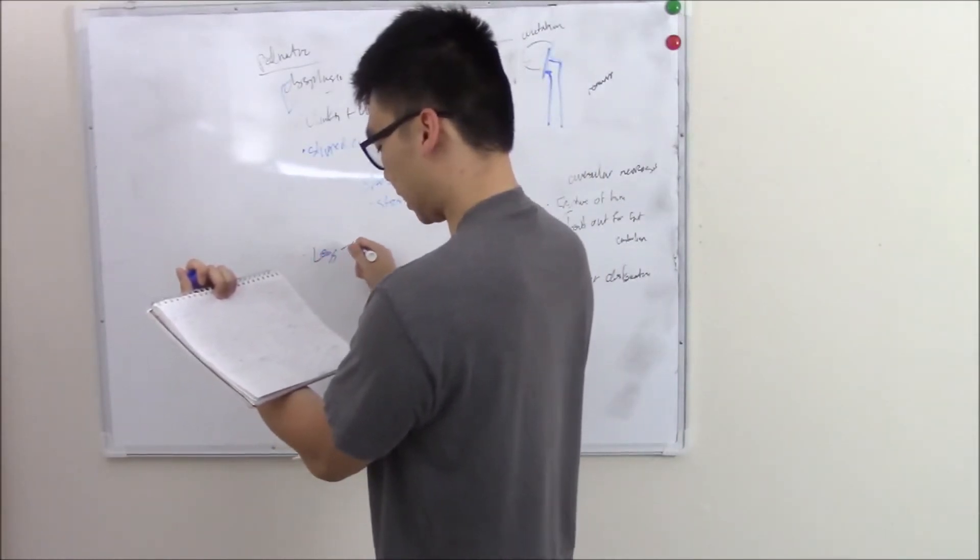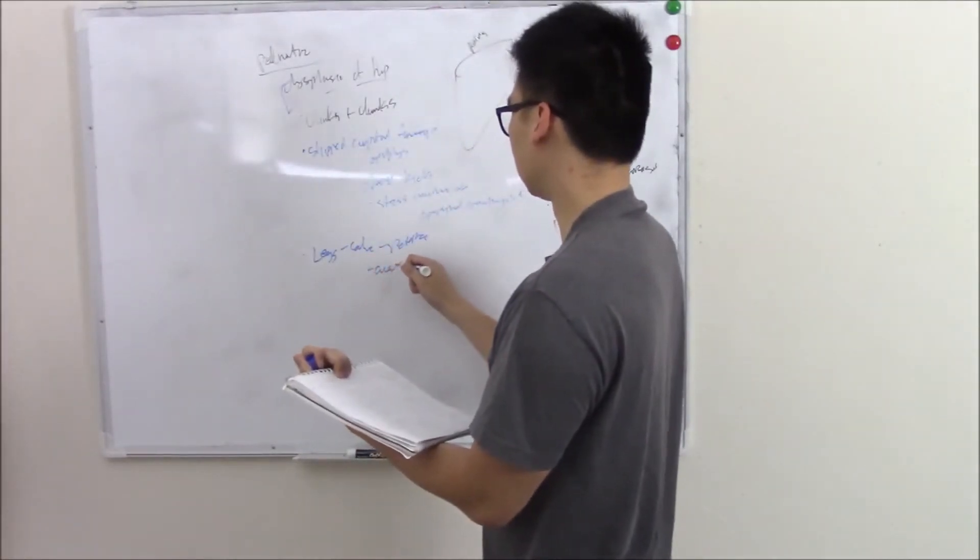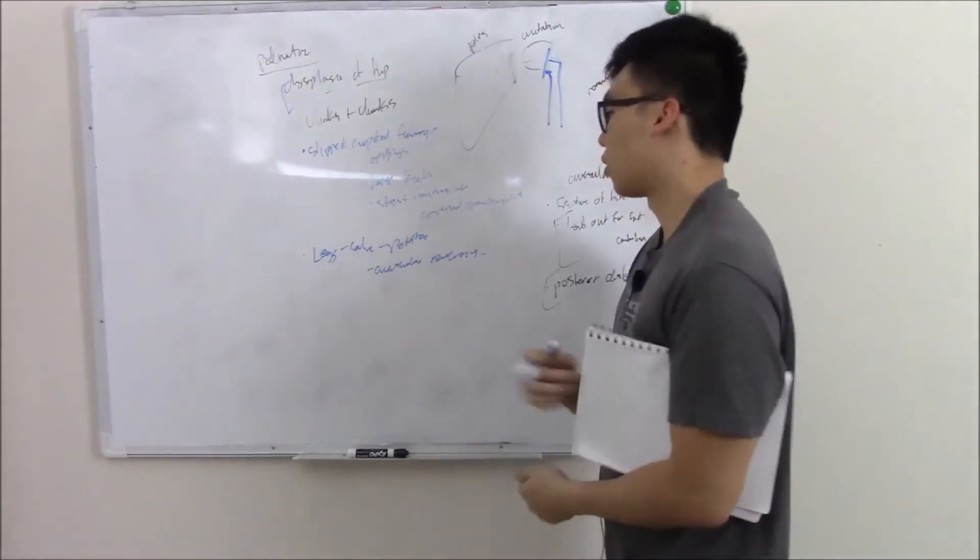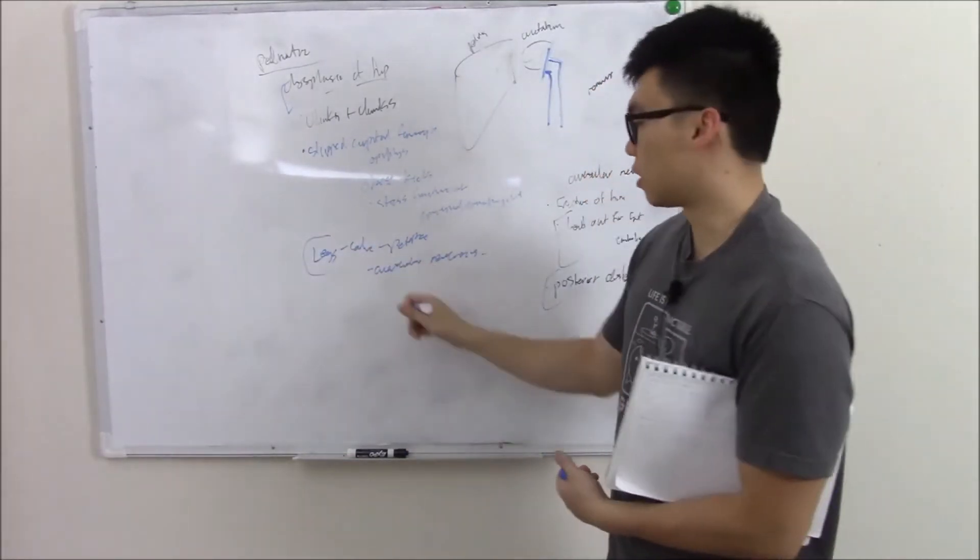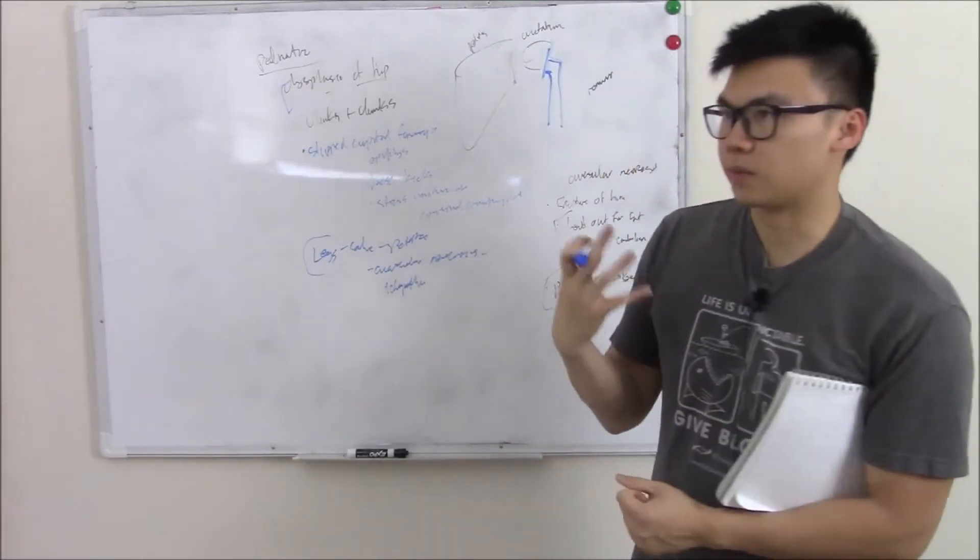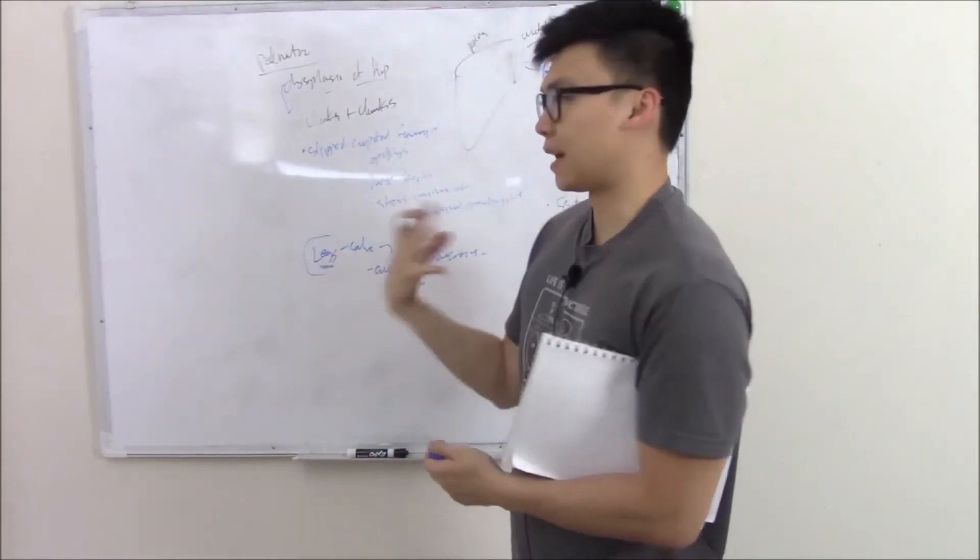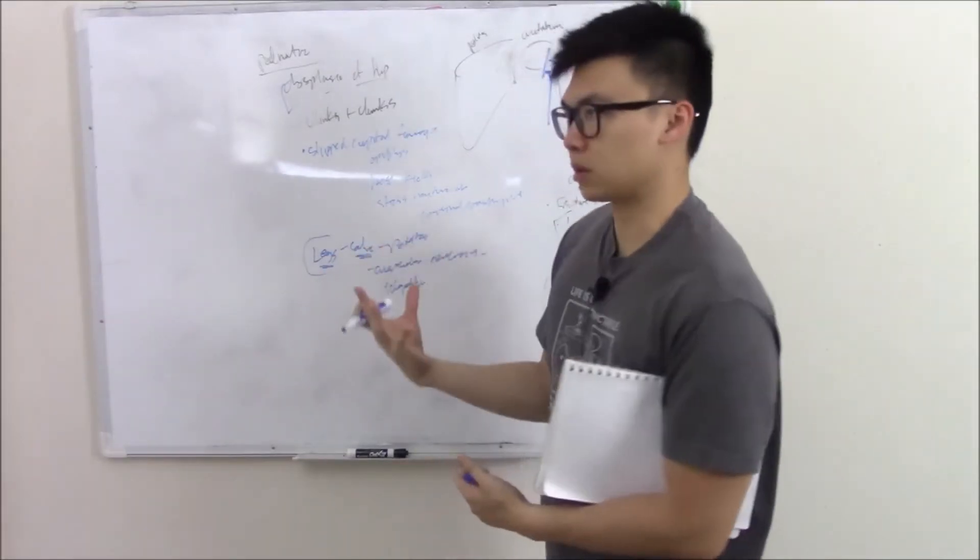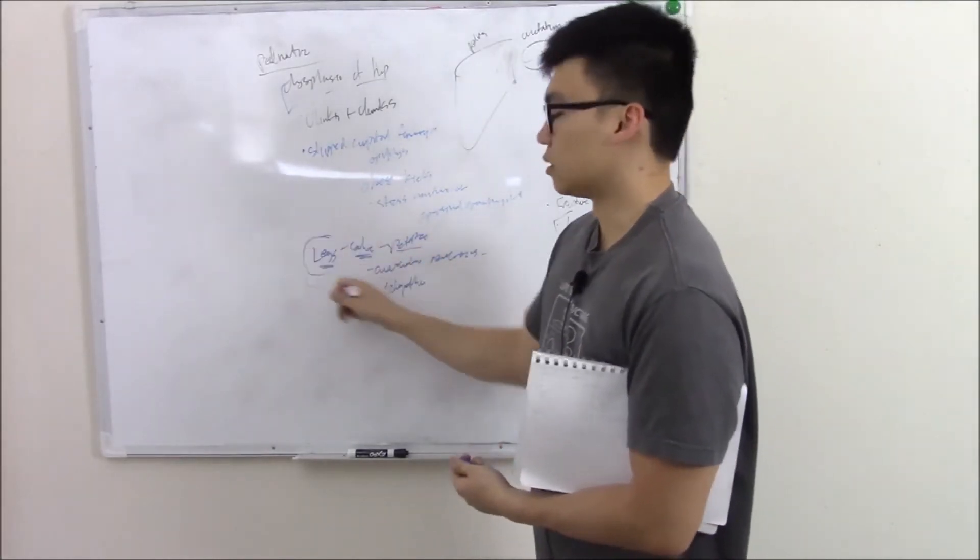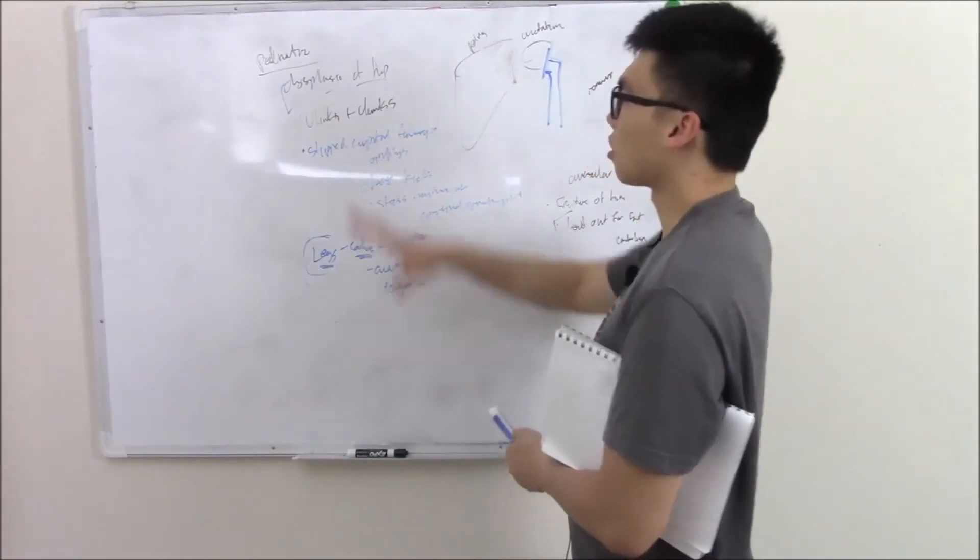Legg-Calvé-Perthes disease. This is just avascular necrosis of the femur. Why do we have a fancy name for this? Because it's idiopathic, we don't know what causes it. You see the femoral head dying and getting all necrosed. Legg-Calvé-Perthes is an avascular problem. Calvé-Perthes is a developmental problem, so rickets. Perthes is an infection that causes arthritis, but no one really knew, so they just call it idiopathic avascular necrosis or Legg-Calvé-Perthes disease. These are all common problems you'll see in your hip.